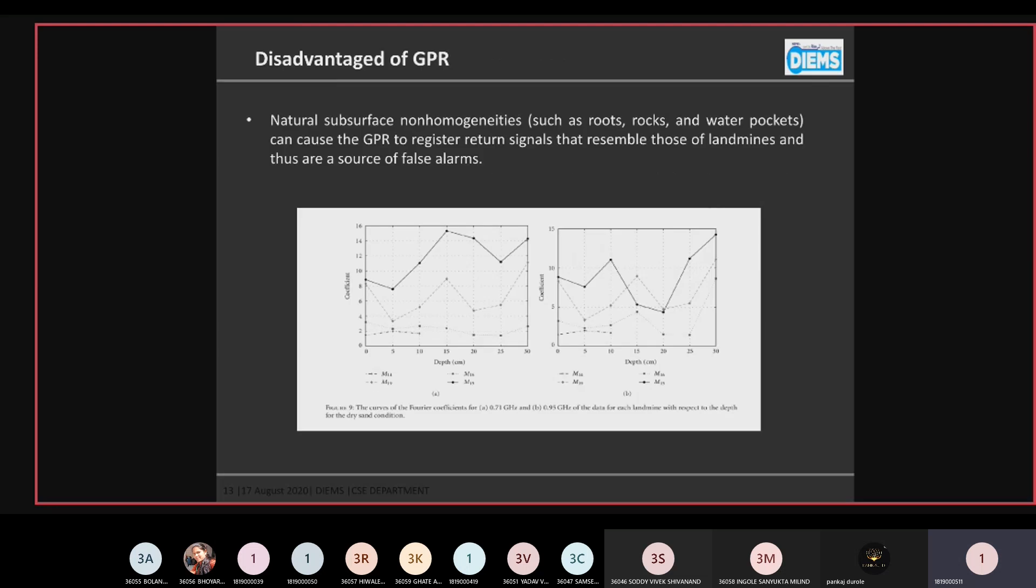Disadvantages of GPR: natural surface is always non-homogeneous, which includes rocks, water pockets, plants and roots of vegetation trees. Due to this, clutter arises, which is a source of false alarms.